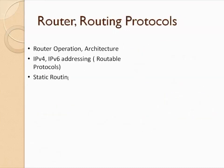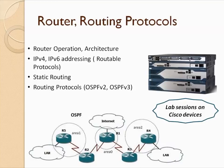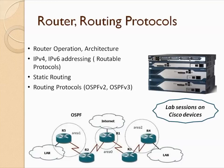Then comes the router and routing protocols. The approach is similar to switches — we'll understand the router first: what it is, how it operates, its internal architecture, and the information bases it uses, such as the Route Information Base and Forwarding Information Base. We'll also go through security details on how you can control user access using access control lists, and QoS policies, all consolidating into a forward information base and the forwarding engine architecture.